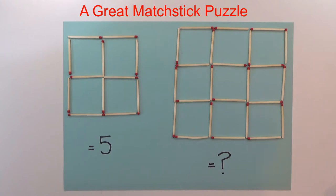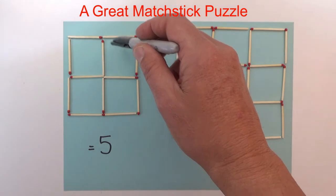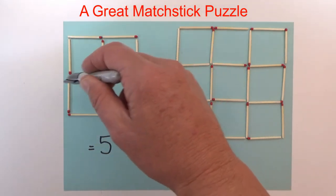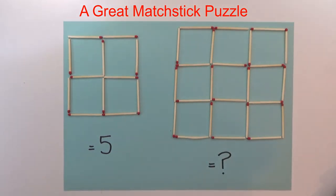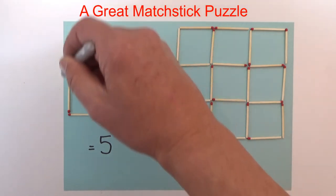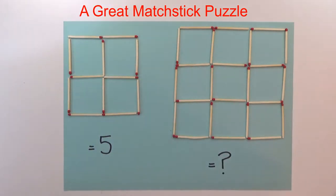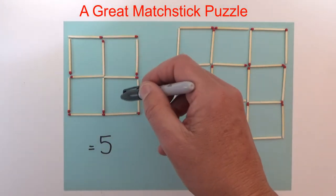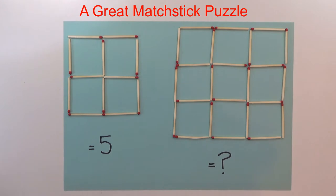The answer is based on the number of squares that each group of matches creates. If we look at the left-hand group of matches, we've got four small one-by-one matchstick squares — one, two, three, four — and there's also a larger two-by-two matchstick square created by the outside of all those matchsticks. So four small squares plus one larger square equals five.